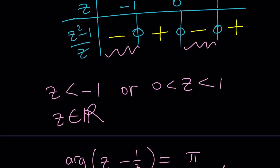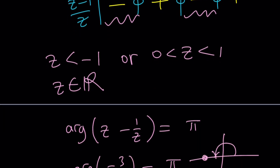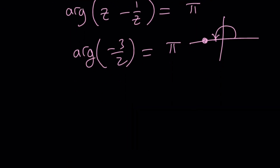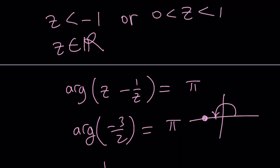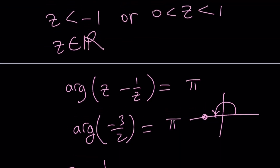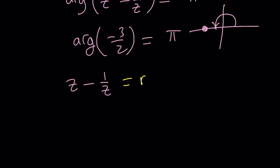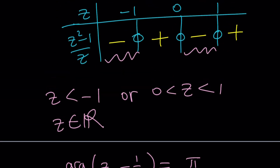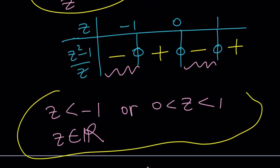This approach is hopefully easier. Here's a further question: can Z minus 1 over Z be a real number for complex values of Z? That's something for you to look into. This brings us to the end of this video — thank you for watching. Please comment, like, and subscribe. I'll see you next time. Until then, be safe, take care, and bye bye.